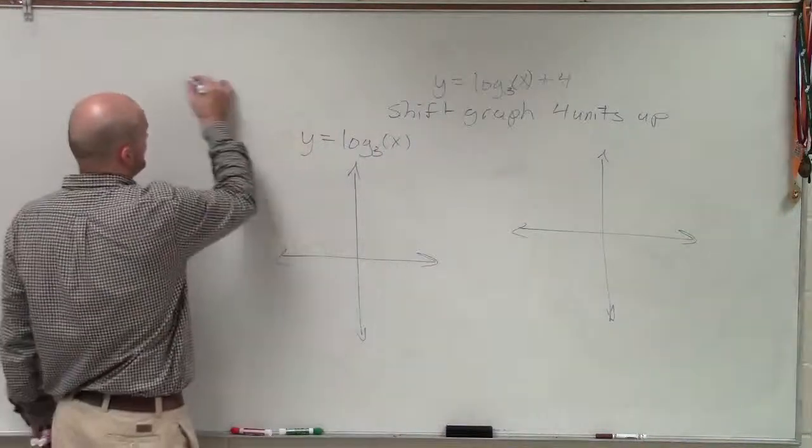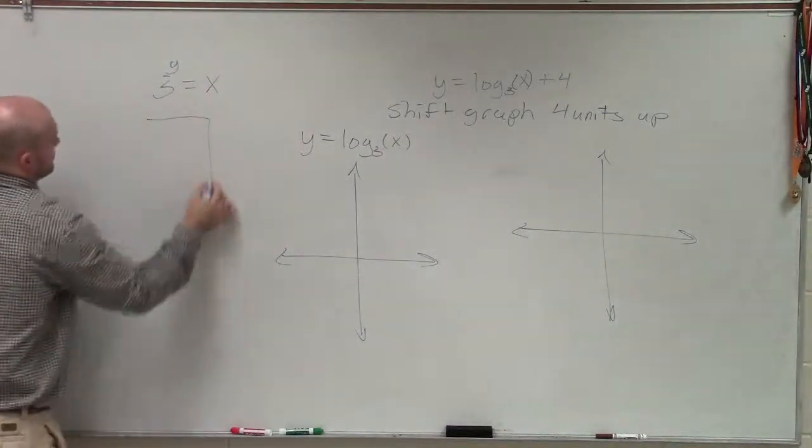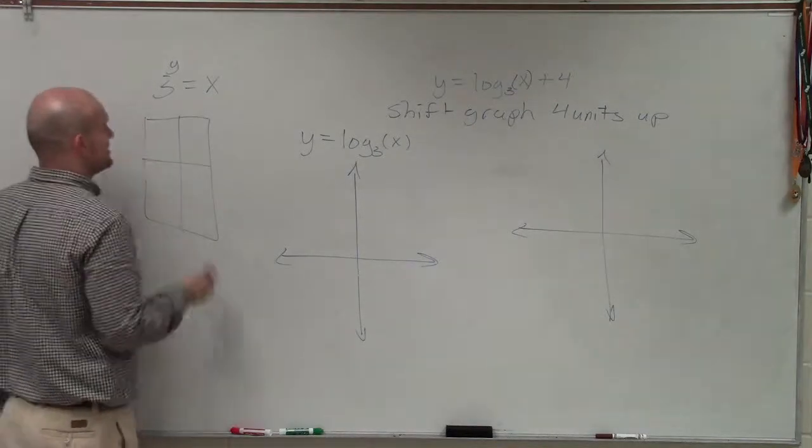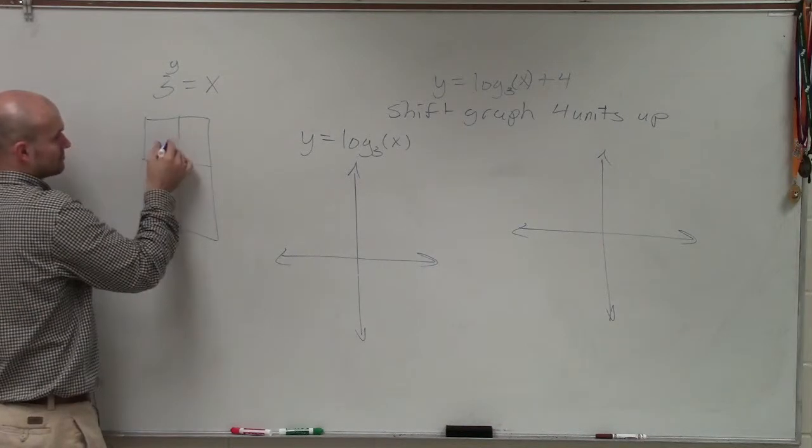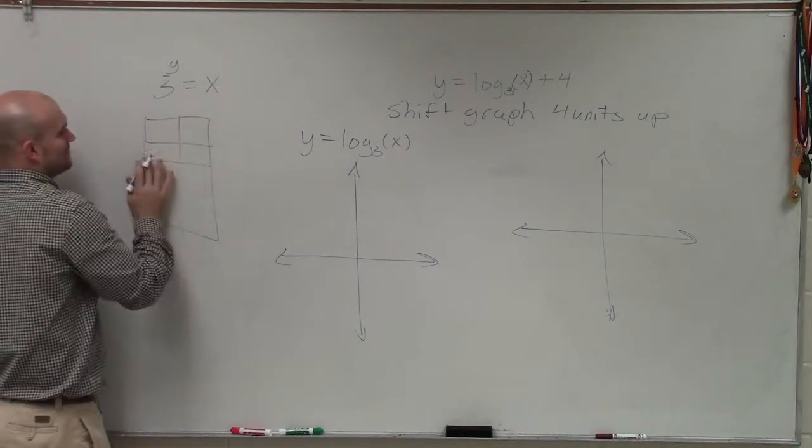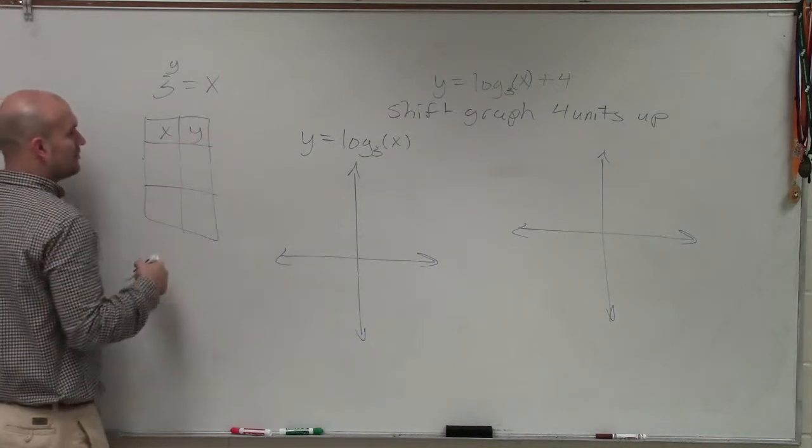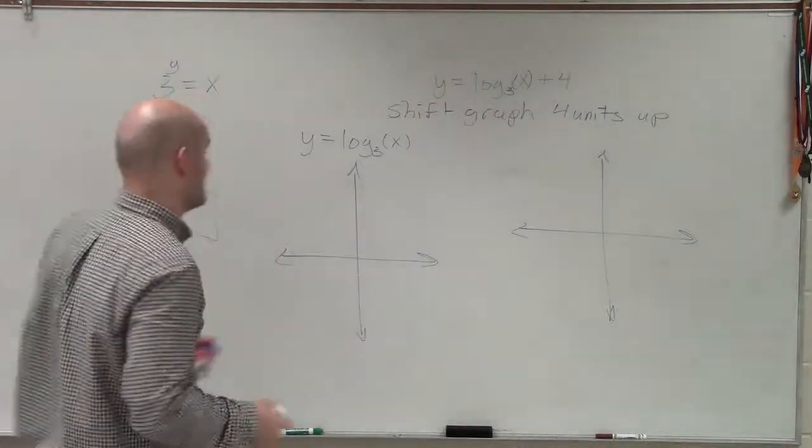So here it's very simple for me to create a table of values because I can rewrite this in exponential form. And then what I can do is, now that it's in exponential form, I can take a look at this and determine my values for x and y. And what I want to do is, when I'm choosing my values for my parent graph, I like to just make this simple.